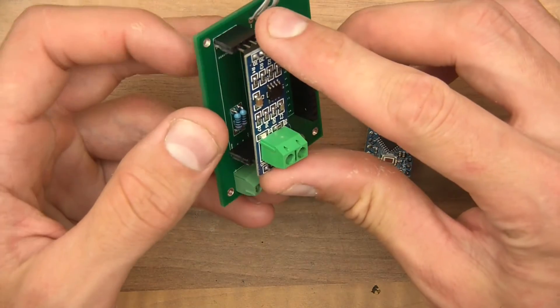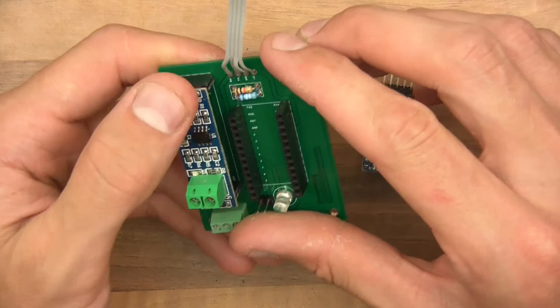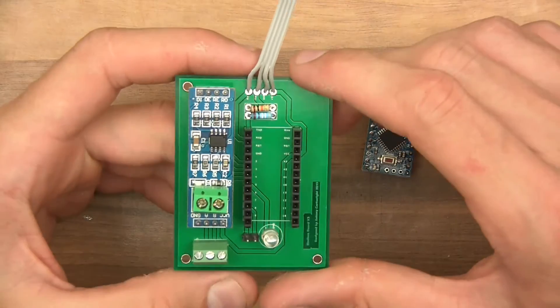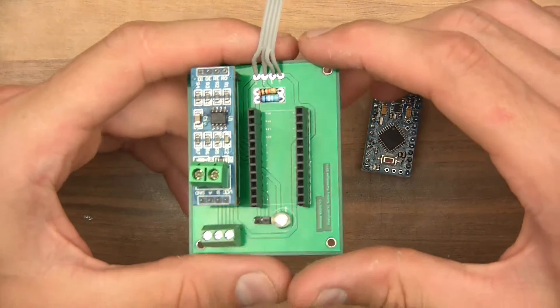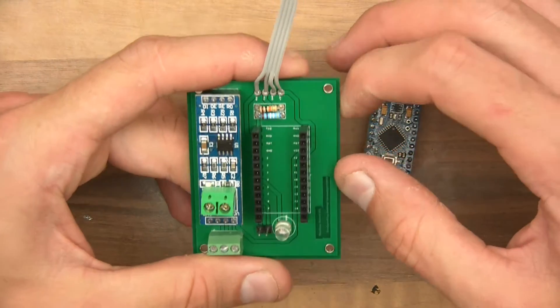So the charge controller uses something called Modbus. Let me just make sure that's right. Yeah, the thing uses Modbus. And the ESP32 can't deal with Modbus, or at least it couldn't at the time. I suspect it's probably still the same now.